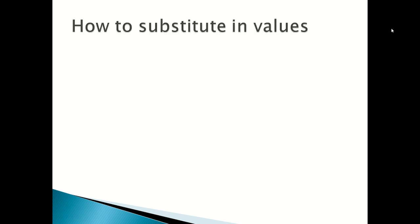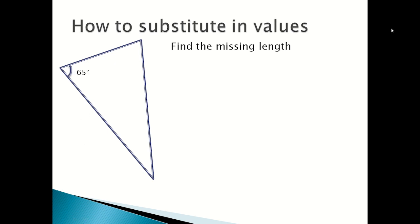So how to substitute in values into the formula. The question will usually be find the missing length. So here's the triangle. Here's the angle which is 65 degrees. And then one side will be 9.5 meters, the other side is 17.4 meters, and then we have the missing length.